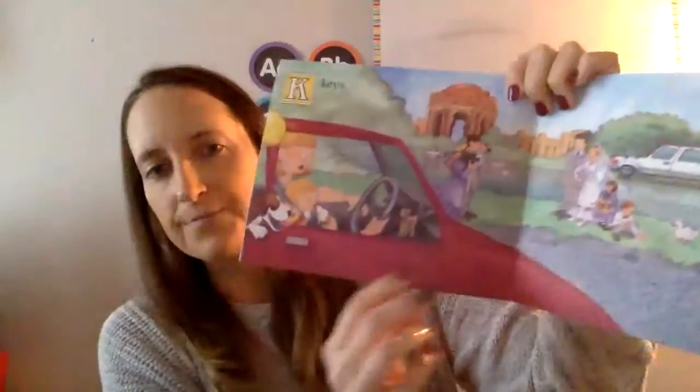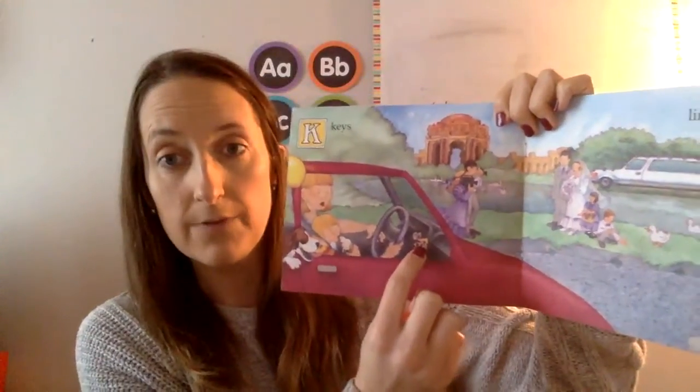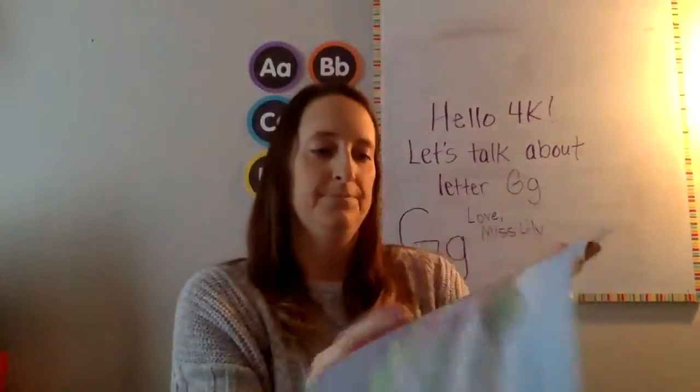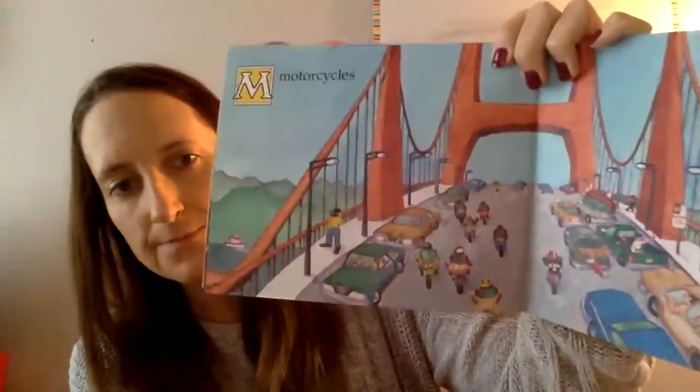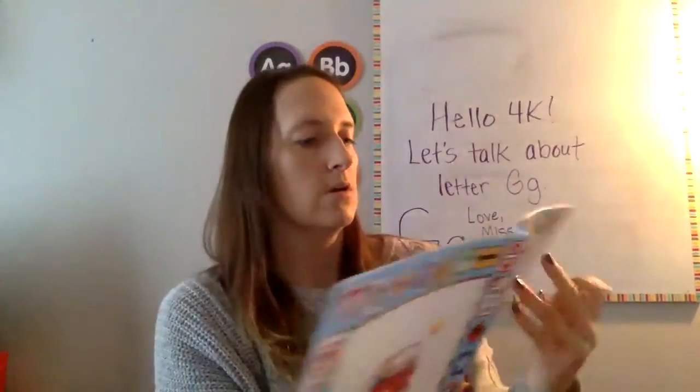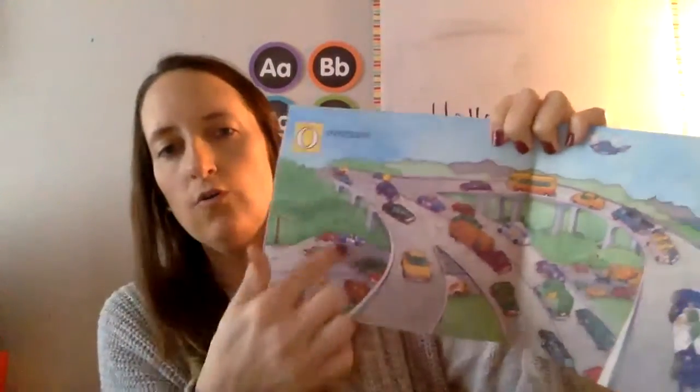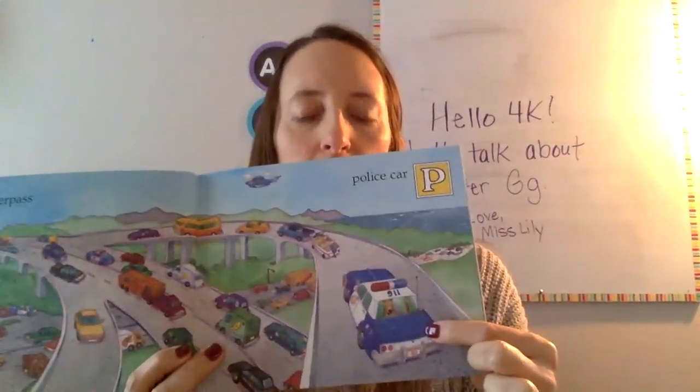J is for jeep. K is for keys. You need keys to make the car run. L is for limousine. M is for motorcycles. N is for no parking sign — can't park there. No, no, no. O is for overpass, like a big bridge. P is for police car.